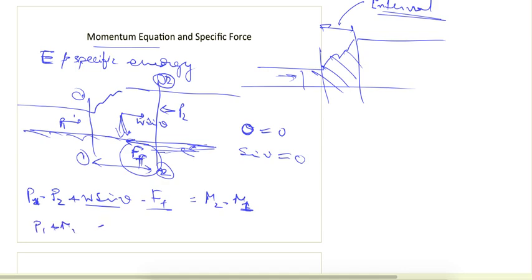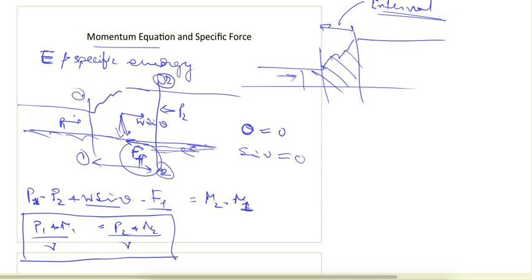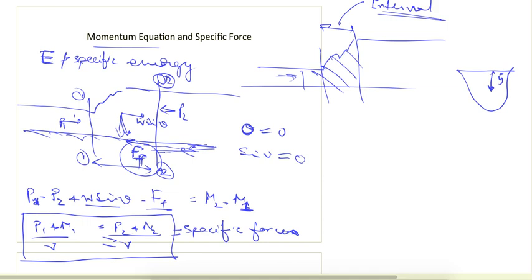This simplifies to: P1 + M1/γ = P2 + M2/γ, which is the equation of specific force. We can generalize this for any channel cross section. If the distance of the centroid from the surface is ȳ, and the pressure distribution is assumed hydrostatic before and after the jump, then the pressure force is γAȳ.